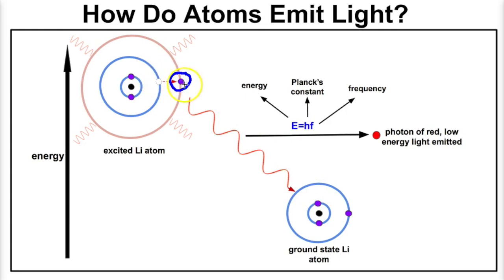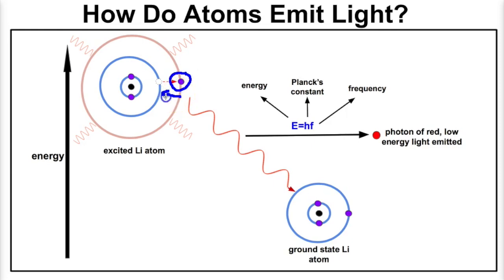Excited atoms want to return to a ground state — they feel much more comfortable with that electron configuration. So the electron that is now in a higher energy level is going to jump back down, and in doing so it has to release a certain amount of energy. This energy comes in the form of light, a form of electromagnetic radiation.